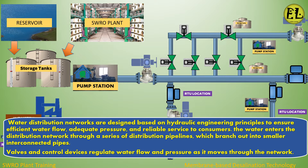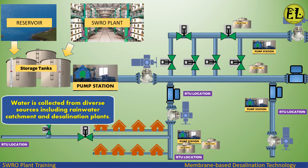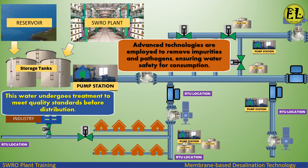Valves and control devices regulate water flow and pressure as it moves through the network. Water is collected from diverse sources including rainwater catchment and desalination plants. This water undergoes treatment to meet quality standards before distribution. Advanced technologies are employed to remove impurities and pathogens, ensuring water safety for consumption.